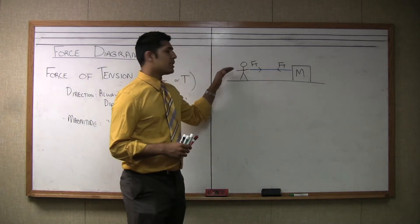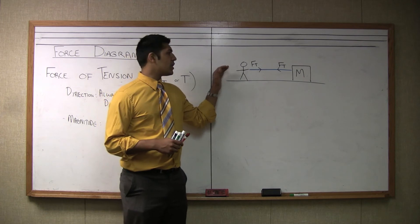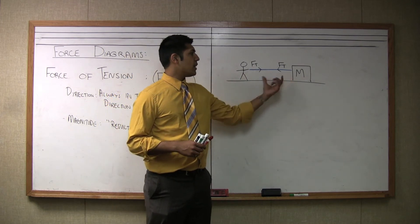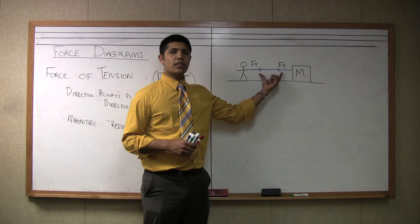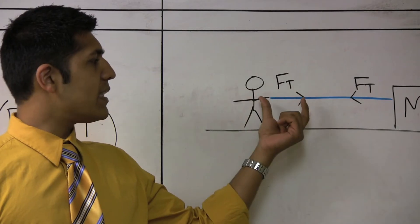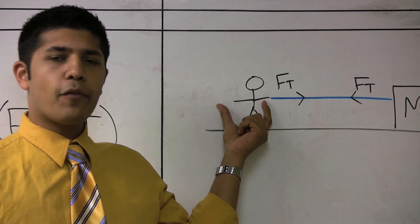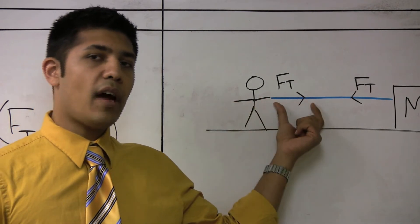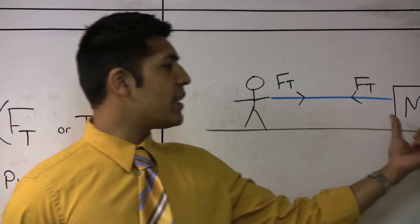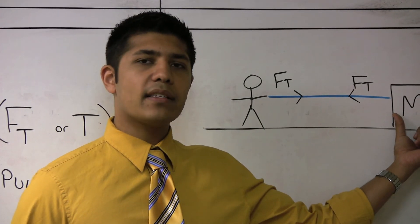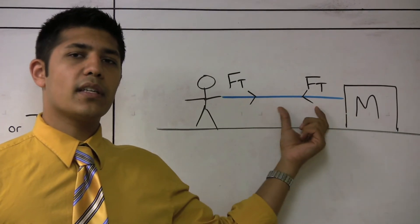Now, I drew a simple picture up here, and this picture is just a man and a box and a blue rope attached to the two. As you can see, the force of tension, if you're writing an F net diagram for the man, is going to be towards the right. Or if you're drawing the diagram in terms of the mass, the force of tension is going to be to the left.